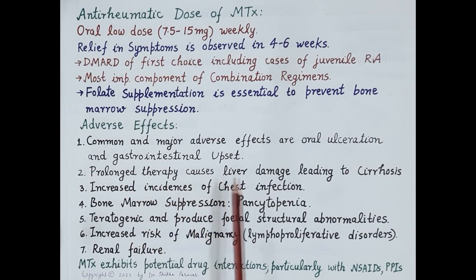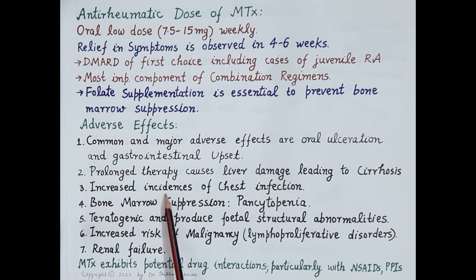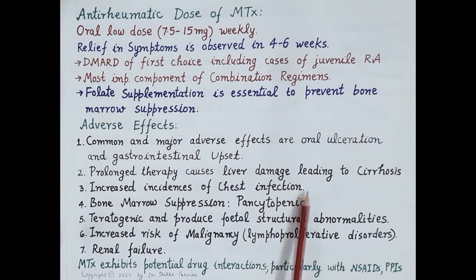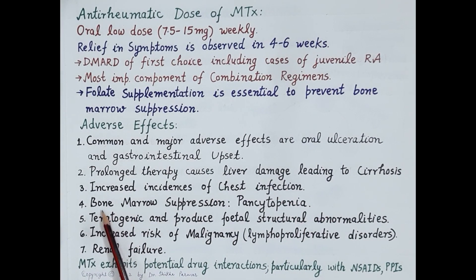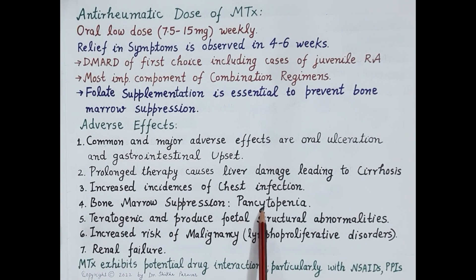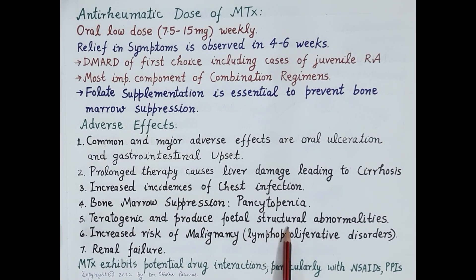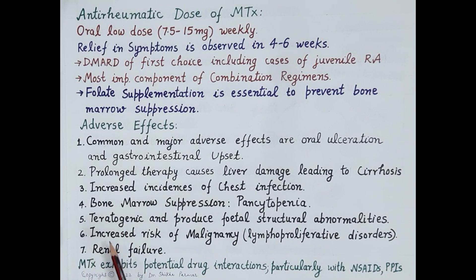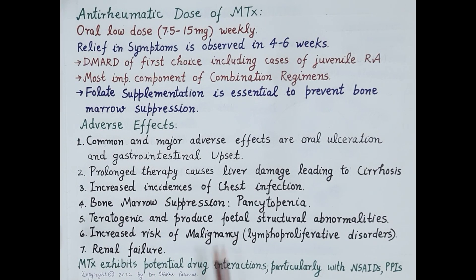Prolonged therapy causes liver damage leading to cirrhosis. Methotrexate increases incidences of chest infection as it causes immunosuppression. It also produces bone marrow suppression leading to disorders like pancytopenia. Methotrexate is teratogenic and produces fetal structural abnormalities, and therefore should not be given to pregnant women.